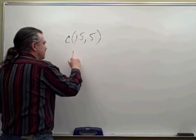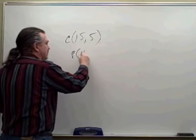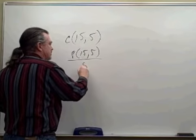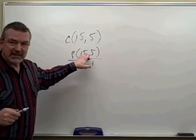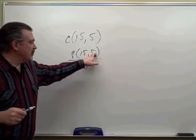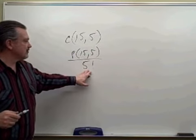It'd be a combination of 15 things taken five at a time. Remember, how you do a combination? It's the permutation divided by the number that you are choosing factorial.